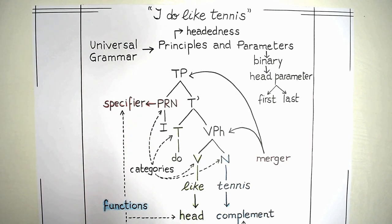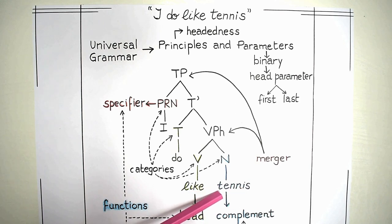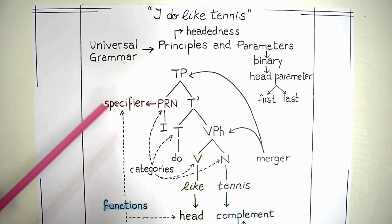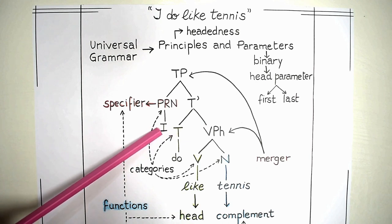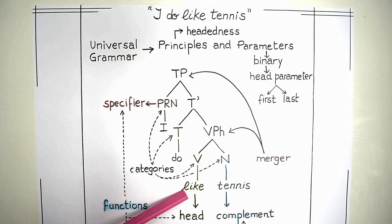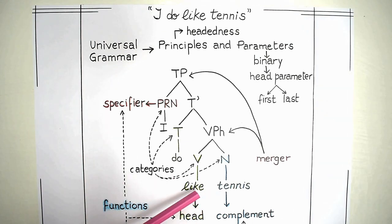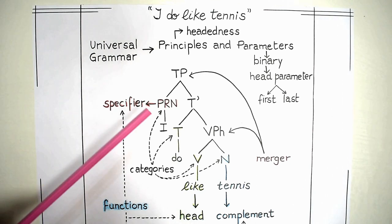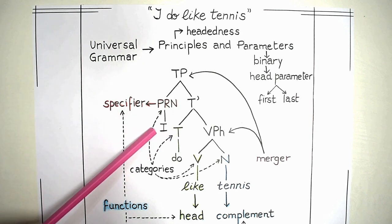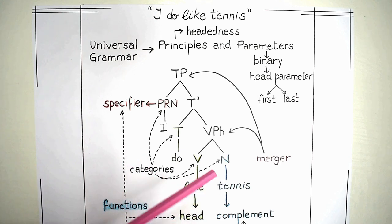The predicator 'like' will have an argument 'tennis' with the theta role of theme, and a whole other argument — the specifier 'I' — with the theta role called experiencer. The verb 'like' is a predicator with two arguments; therefore it is called a two-placed verb. The argument 'tennis' is the thing that is being liked — therefore it is called the theme — and the specifier 'I' is the sensor, or experiencer, of the emotion 'like', and it receives the theta role of experiencer. Theta role may be pronounced either 'theta' or 'theta' depending on the dialect.